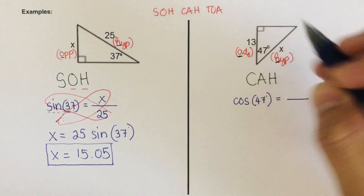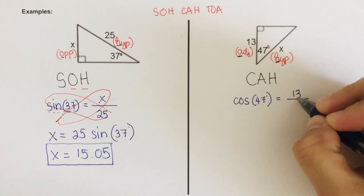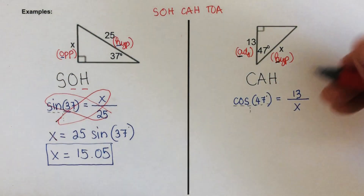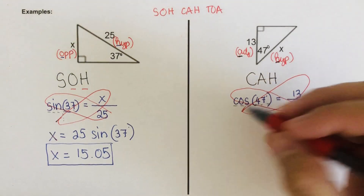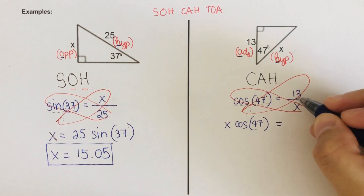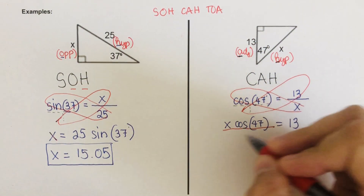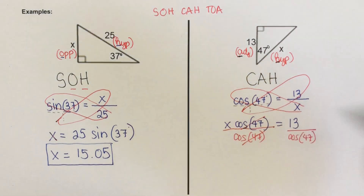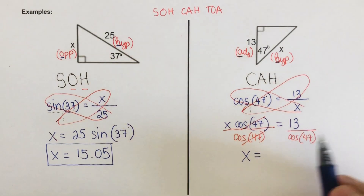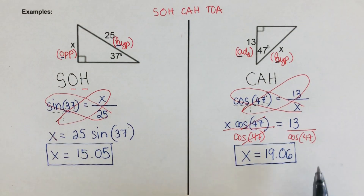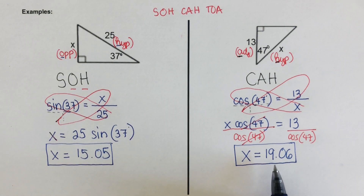Using the cosine ratio, we write: cosine of 47 degrees equals adjacent over hypotenuse, which is 13 over X. With an invisible denominator of one, we cross multiply: X times cosine 47 equals 13. Dividing both sides by cosine 47, we get X equals 13 divided by cosine 47, which is 19.06. If you don't get 19.06, make sure your calculator is set to degrees. Did you get 19.06 as your answer to the third one?